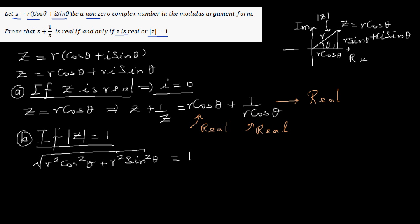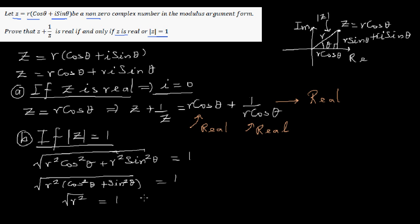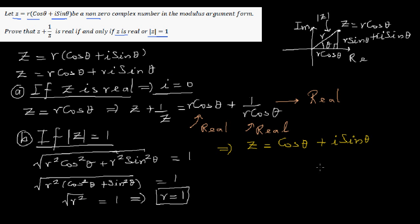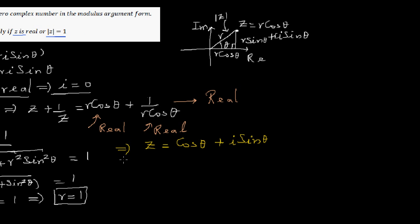So the x-component is R cosθ and the y-component is R sinθ. Factoring out R²: √(R²(cos²θ + sin²θ)) = 1, which gives R² = 1, so R = 1. This means Z becomes cosθ + i sinθ. Now the next step is the most difficult step.